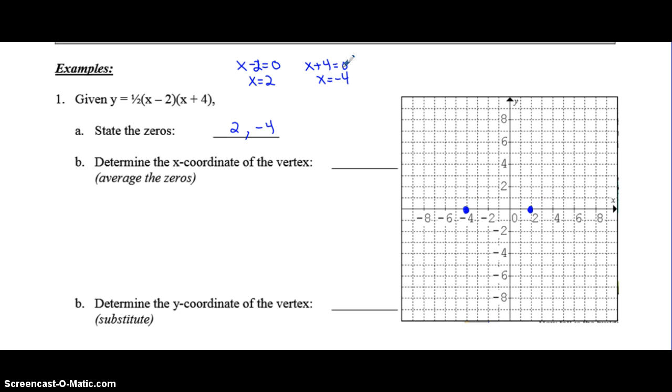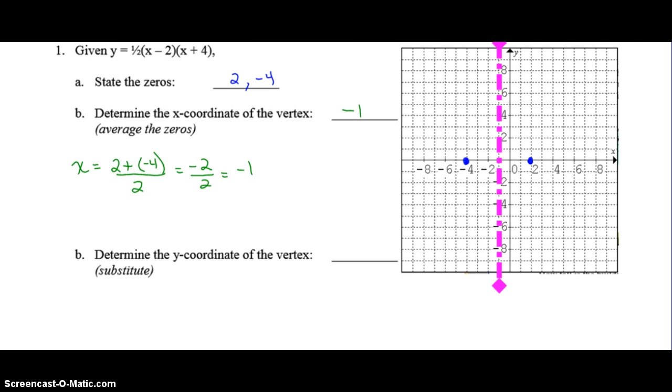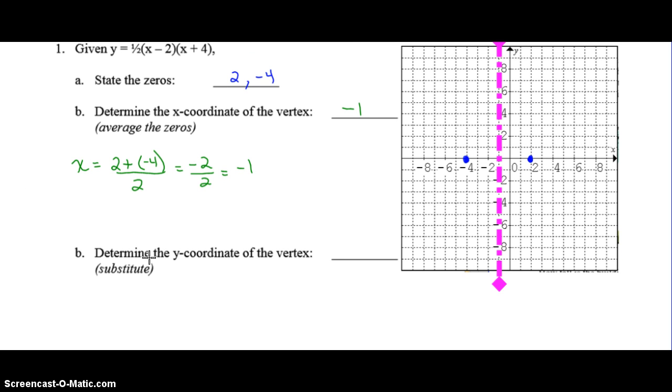So to determine the x-coordinate of the vertex, you have to average the zeros, which means you have to take the two zeros, add them together and divide by 2. 2 plus negative 4 is negative 2. Negative 2 divided by 2 is negative 1. So the x-coordinate of the vertex is at negative 1, which means that's where your axis of symmetry would be. You don't have to graph the axis of symmetry if you don't want to but it might provide a good visual and it might help you.